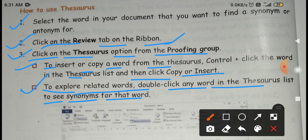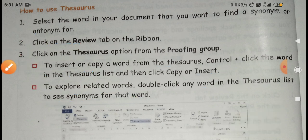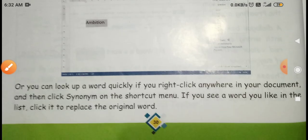To see synonyms for that word, you will double click any word in the thesaurus list. Or you can look up a word quickly if you right click anywhere in your document and then click synonyms on the shortcut menu. If you see a word you like in the list, click it to replace the original word.